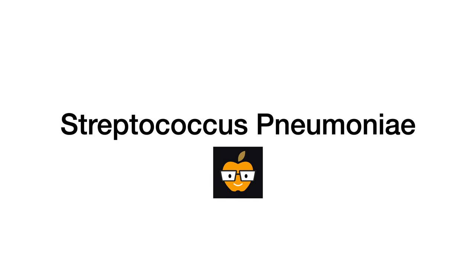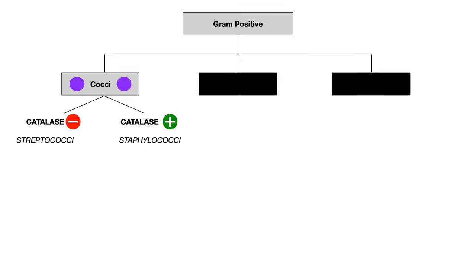In this video we'll talk about Streptococcus pneumoniae. If you're going in order and following my microbiology series the way that I had intended, this should be the first video where you're listening about a Streptococcal species. Recall from the previous video that we made it down the flow diagram and talked about gram-positive organisms, which were separated into three broad categories. We're now focusing on the catalase negative branch.